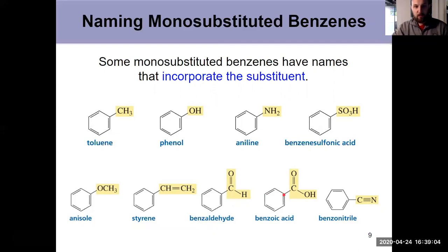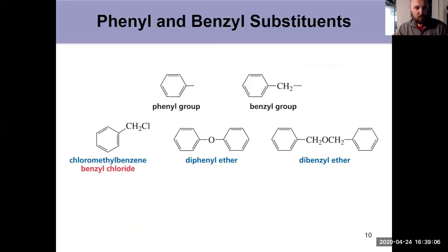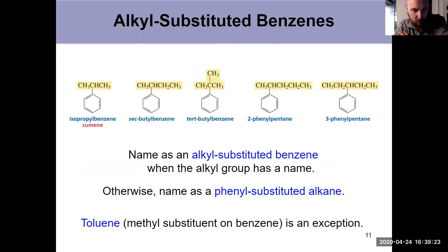We also have the situation where the group itself, the benzene group, is a substituent. And I've talked about this in the past as well. Just a benzene ring is called a phenyl group. A benzene ring plus that methylene group is called a benzyl group. So we see those incorporated in names as well. So we've already seen that in the past.